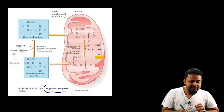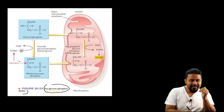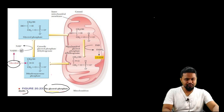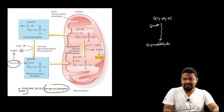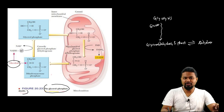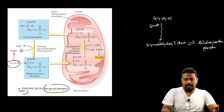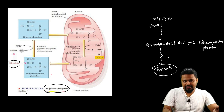Next is the glycerol phosphate shuttle system. In the glycolysis process, glucose is converted through glyceraldehyde-3-phosphate and dihydroxyacetone phosphate, and the complete reaction gives pyruvate, ATP, and NADH.